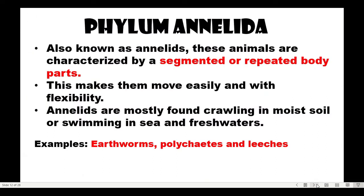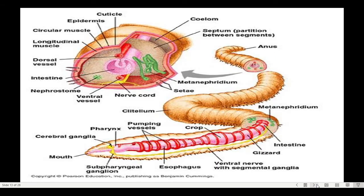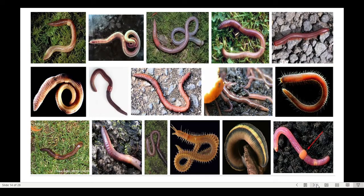Next, Phylum Annelida. Also known as annelids, these animals are characterized by segmented or repeated body parts, which makes them move easily and with flexibility. Annelids are mostly found crawling in moist soil or swimming in sea or fresh waters. Examples are earthworms, polychaetes, and leeches (linta).